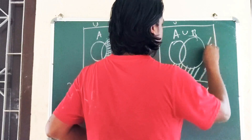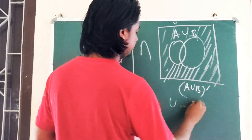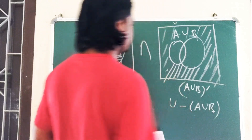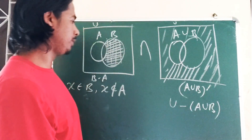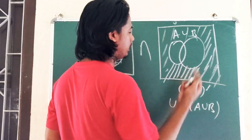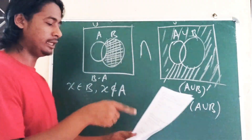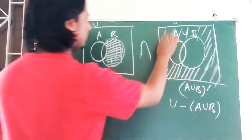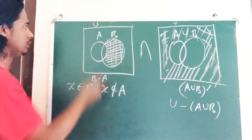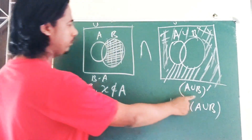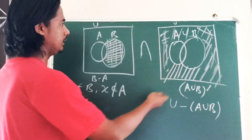A union B complement is U difference (A union B) — meaning x does not belong to A or B. Now we need the intersection of B difference A and A union B complement. The B difference A part lies inside B but outside A, while A union B complement lies entirely outside both A and B. These two regions share no common elements.